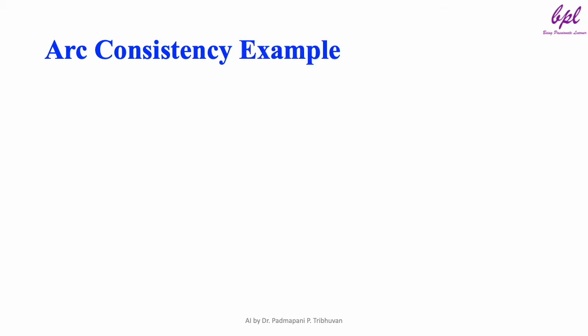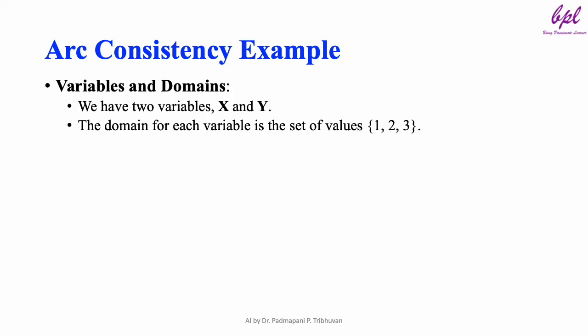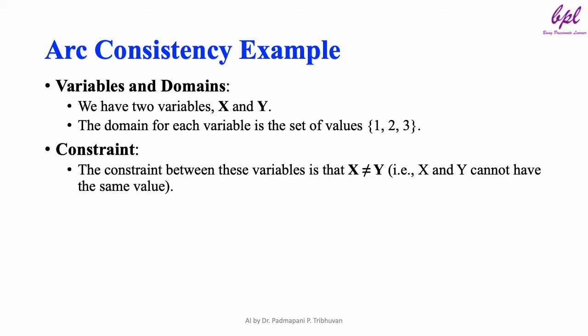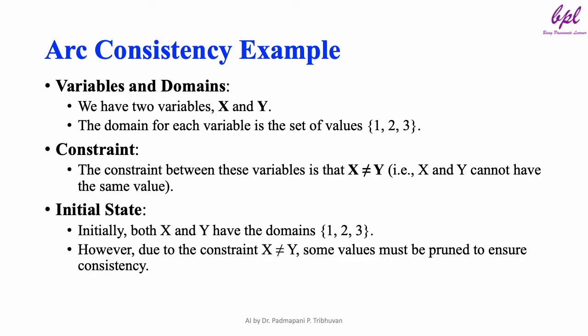Arc-Consistency example: In this example, we have two variables X and Y. The domain for each variable is a set of values 1, 2, 3. The constraint between these variables is that X is not equal to Y. That means X and Y cannot have the same value. Initially, both X and Y have the domain 1, 2, 3. However, due to the constraint X is not equal to Y, some values must be pruned to ensure consistency.